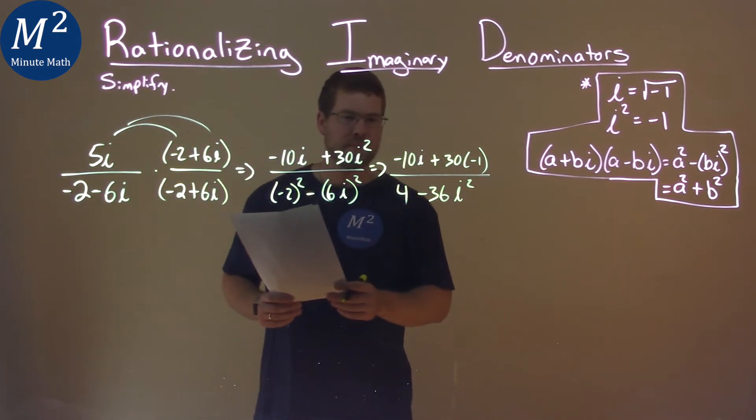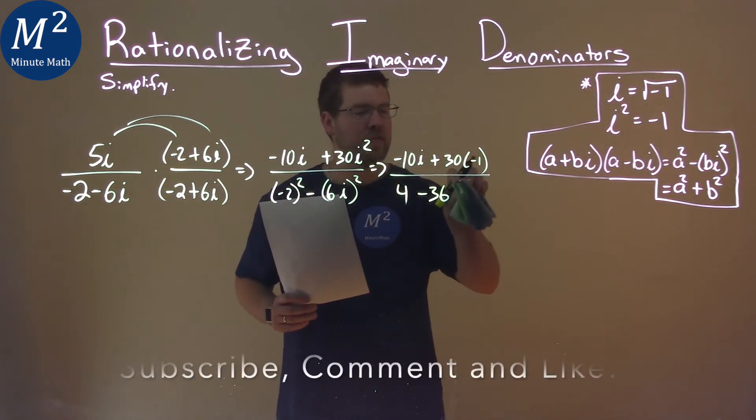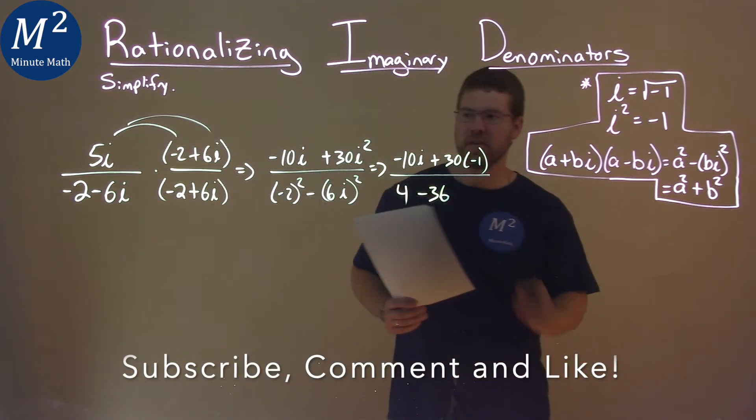Now here's the beauty. i squared is negative 1. We can erase that and put that as negative 1 right here, just like we did in the numerator.